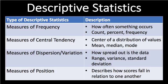Measures of central tendency is the center of a distribution of values. You have a set of numbers and you want to know which one falls in the middle. This includes mean, median, and mode — I'm assuming you know what those mean.